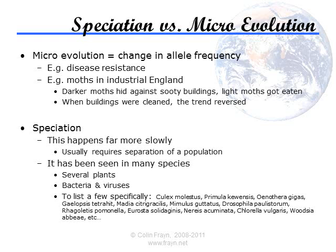Speciation happens very slowly, on evolutionary timescales of tens or hundreds of thousands of years — sometimes millions — at least for animals like us with lifetimes measured in years or decades. So we certainly wouldn't expect to see it happening before our eyes in tigers or elephants. However, we might expect to see examples of speciation having happened in recent history — such as the celebrated Galapagos finches Darwin spotted, with beaks adapted for feeding from different sources, or the cichlid fish in Lake Victoria, which span a range of species all thought to have evolved from a common ancestor.